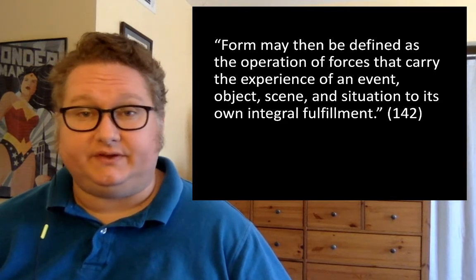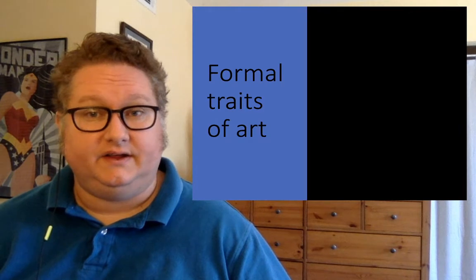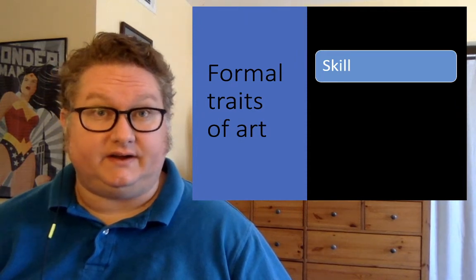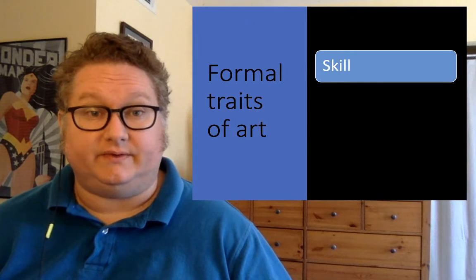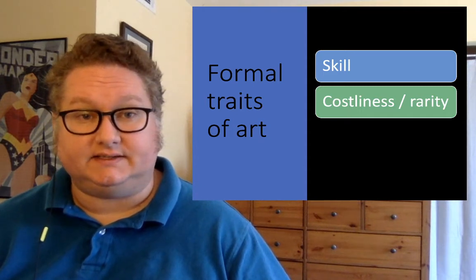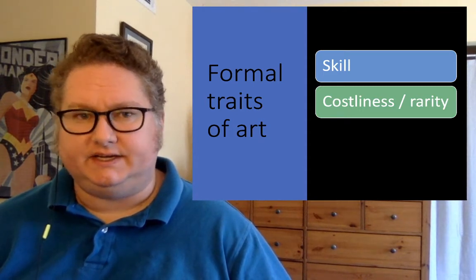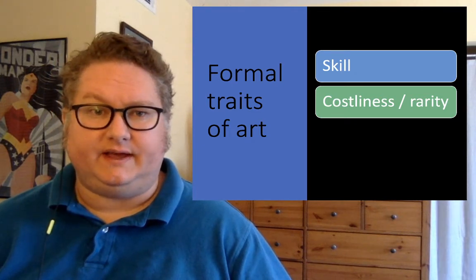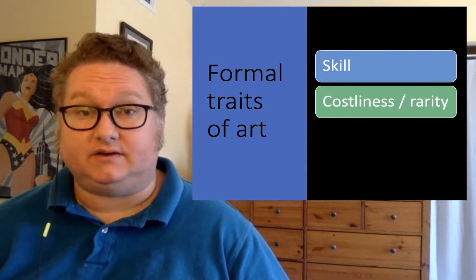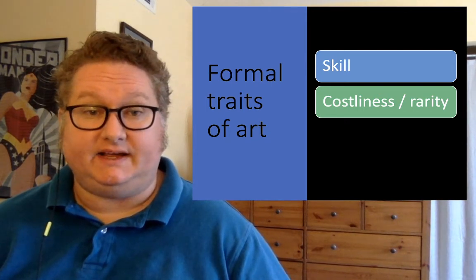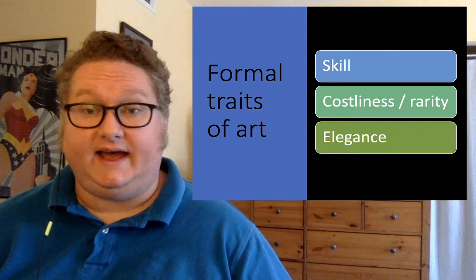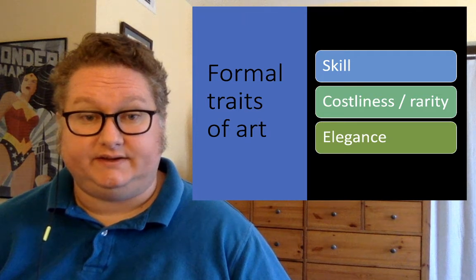Dewey gives various examples throughout the chapter of formal traits of art. Some of them include skill — skill is not just something that the artist has, but something that can be seen in the formal characteristics of the artwork. Costliness or rarity — he quotes Santayana as giving an example of how the costliness or rarity of a work of art gives a way of overcoming mechanical reproduction by promoting novelty. Elegance is also an example he gives of a formal trait of art.